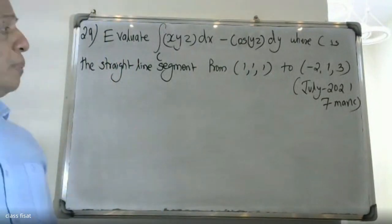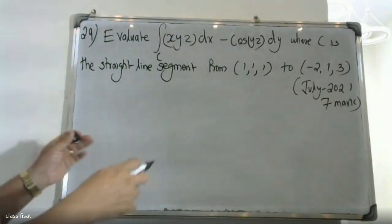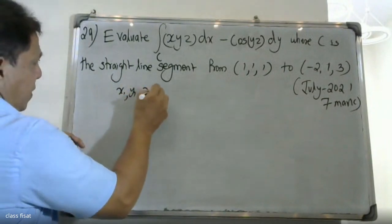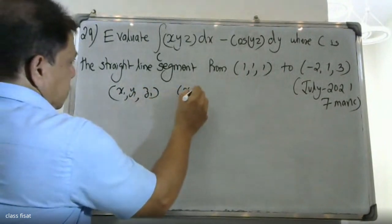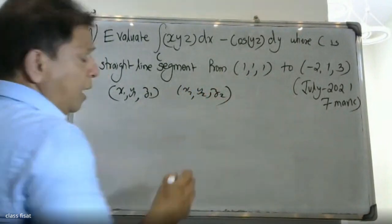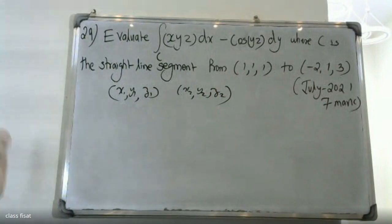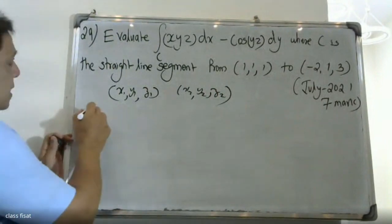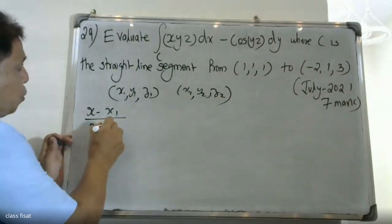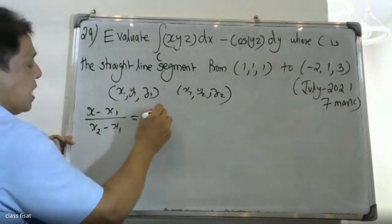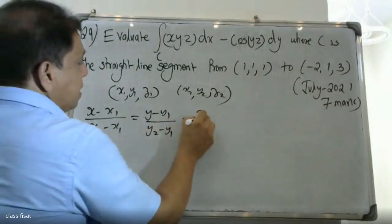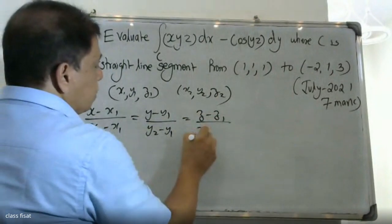This is a peer problem. I'm going to change the render point. We have three points: X1, Y1, Z1 and X2, Y2, Z2. Here is the point again. I'm going to apply the formula: (X minus X1) over (X2 minus X1), (Y minus Y1) over (Y2 minus Y1), (Z minus Z1) over (Z2 minus Z1).